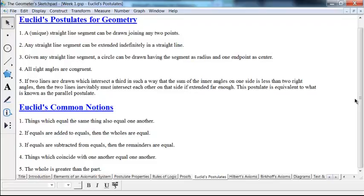Number four, all right angles are congruent. And number five, if two lines are drawn which intersect a third in such a way that the sum of the inner angles on one side is less than two right angles, then the two lines inevitably must intersect each other on that side if extended far enough.